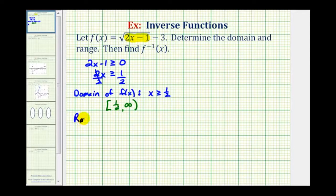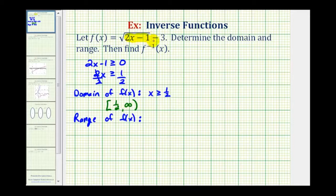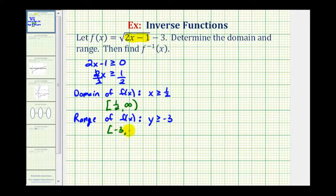To find the range of f of x, we want to determine all the possible y values. The value of this square root is always going to be greater than or equal to zero, so the smallest value this could be would be zero minus three, which is negative three. All other function values would be larger, so the range is y greater than or equal to negative three, or the interval from negative three to infinity.